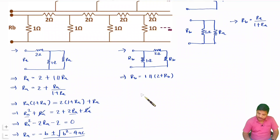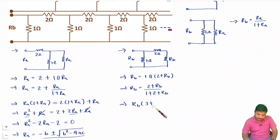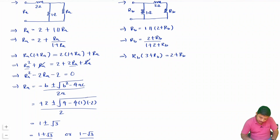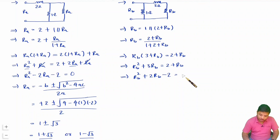So RB = 1 × (2 + RB) / (1 + 2 + RB) = (2 + RB) / (3 + RB). Taking LCM: RB × (3 + RB) = 2 + RB. Simplifying: RB² + 3RB = 2 + RB, which gives RB² + 2RB − 2 = 0.